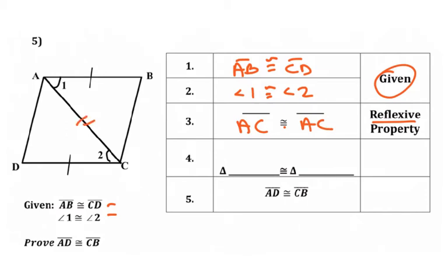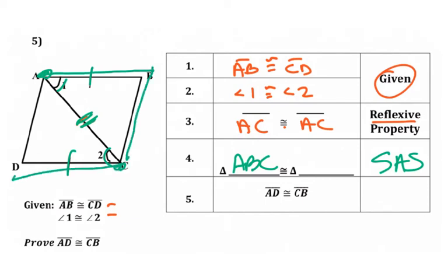Then number 4, it says triangle blank is congruent to triangle blank. So look, do I have enough? Look at this triangle. I've got a side, an angle, and a side compared to a side, an angle, and a side. And so I can say that triangle ABC is congruent to triangle blank. Be careful. So I started out with angle A, B, and C. So I'm going to have to go from C to D to A. You've got to make sure you go in the right order so that everything matches up. Otherwise, what we do next won't work.